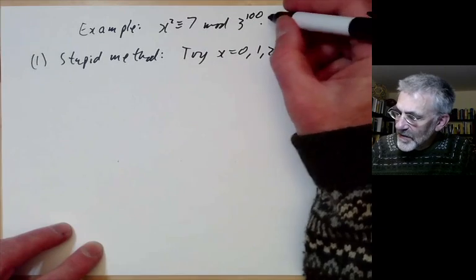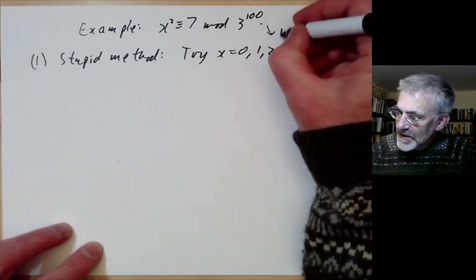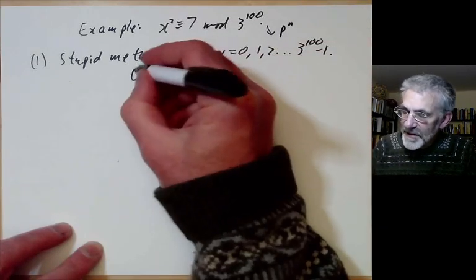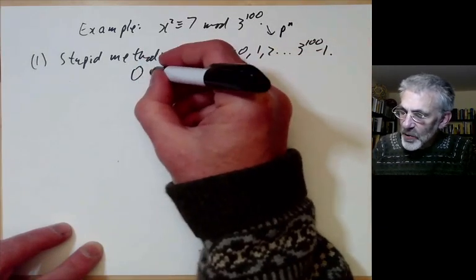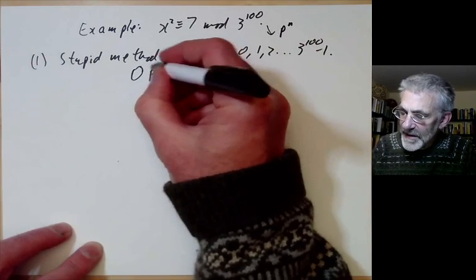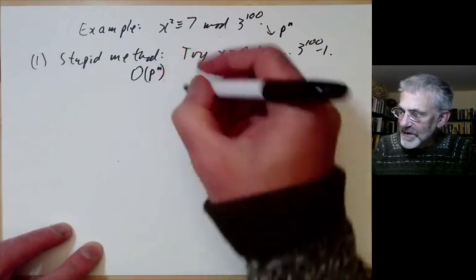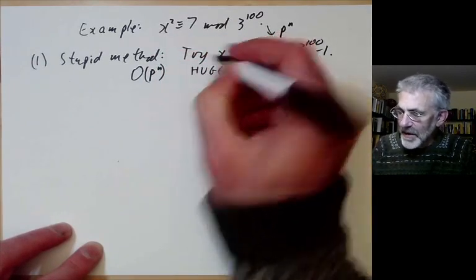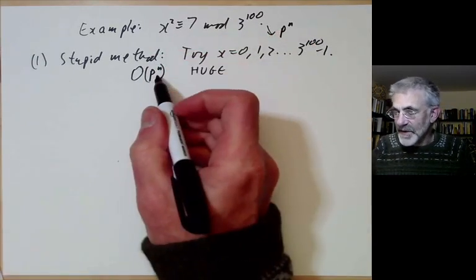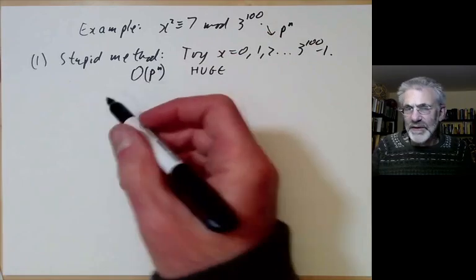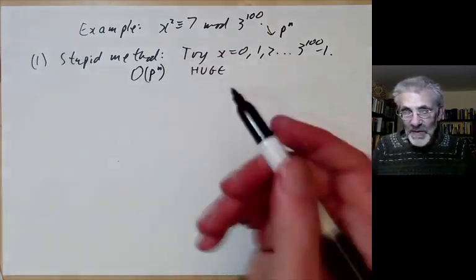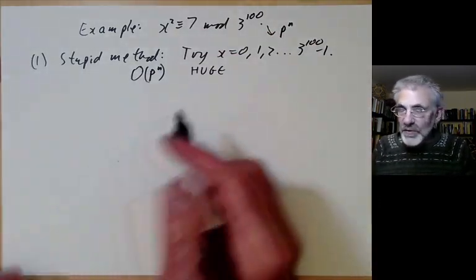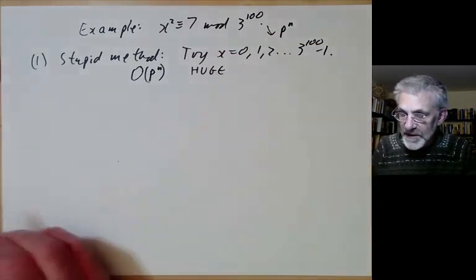Here we have 3^100 as our number p^n, and this approach takes on the order of p^n steps. This will be huge — at least if n is reasonably large. It would take more than the age of the universe to find the solution.